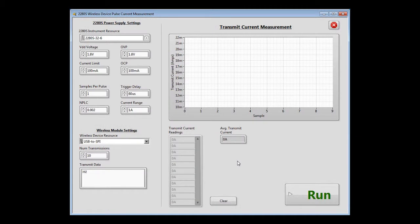This test program automates the process of configuring the wireless module and configuring the Series 2280S power supply for making fast pulse current measurements. Using this program, we will make 10 current measurements over 10 separate transmissions and get back the data.